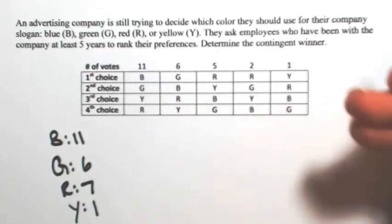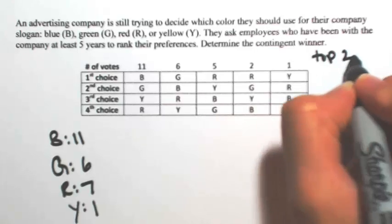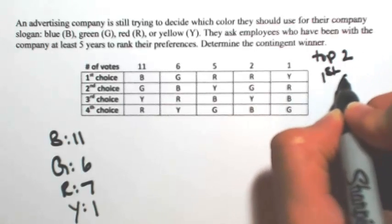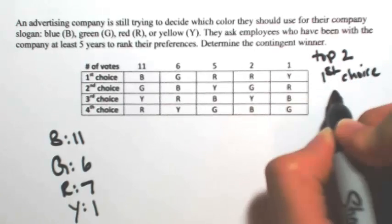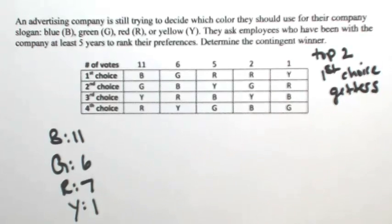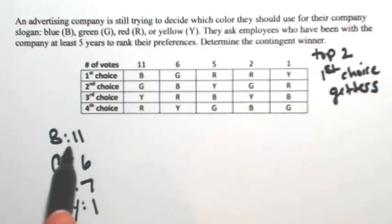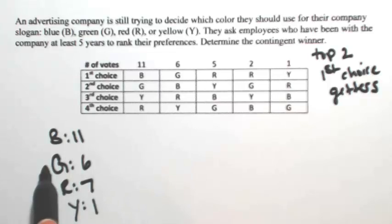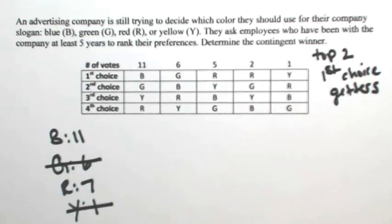So in doing the contingent winner method, you're always going to take the top two first choice getters. Since I have four candidates, I'm going to take half of them. So the ones with the most are B and R. We're going to knock out G and Y.